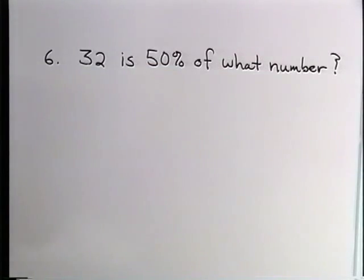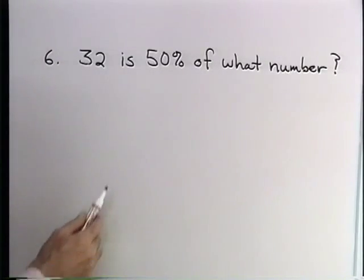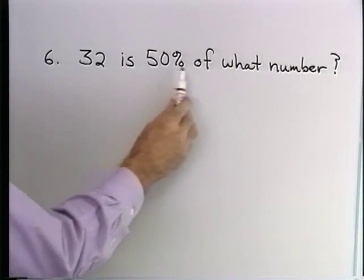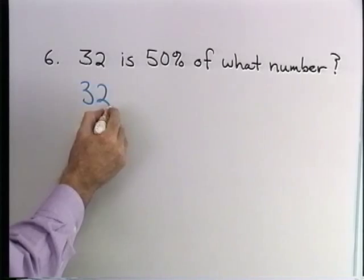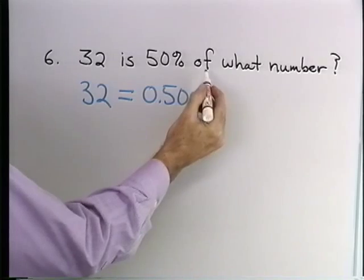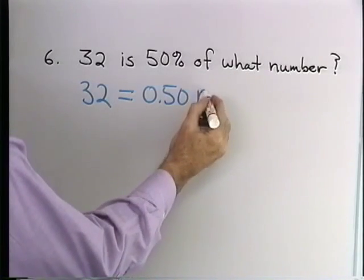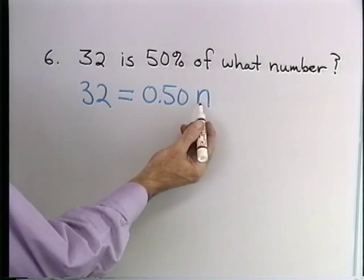Here's our last problem. 32 is 50 percent of what number? Well, we could do this in our heads if we have an intuitive idea about percent. 32 is going to be 50 percent of 64, but let's do the translation and see how it looks. 32 is 50 percent is 0.50. Of means multiply, and then what number? That will be n.